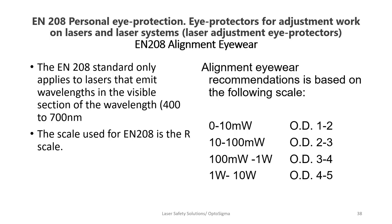EN-208 covers personal eye protection for adjustment work on lasers and laser systems — meaning laser alignment. It is the only standard dedicated entirely to alignment, covering visible wavelengths from 400 to 700 nanometers. The scale number used for alignment eyewear is R rather than L, and there are recommendations for optical density for different outputs.